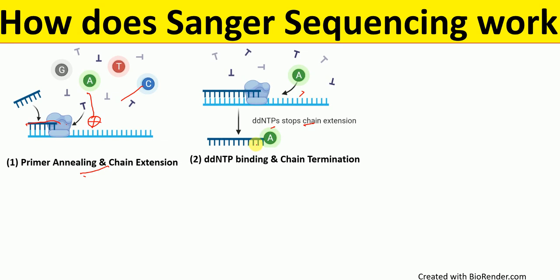Why do ddNTPs result in chain termination? Because ddNTPs lack the 3' hydroxyl group. The 3' hydroxyl group is required for phosphodiester bond formation. When DNA polymerase incorporates these ddNTPs at random positions, the chain is terminated and cannot extend further.